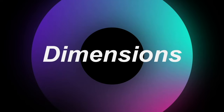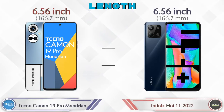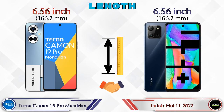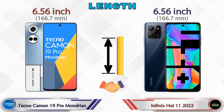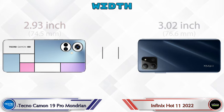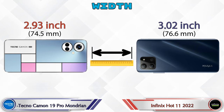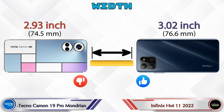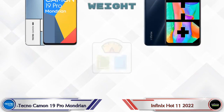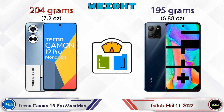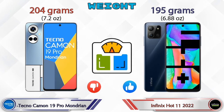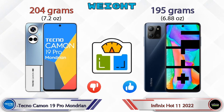Now let's check the dimensions. Both phones have the same length of 6.56 inches. Width: the 19 Pro Mondrian is 2.93 inches and the Hot 11 2022 is 3.02 inches. Weight: the 19 Pro Mondrian is 204 grams and the Hot 11 2022 is 195 grams.